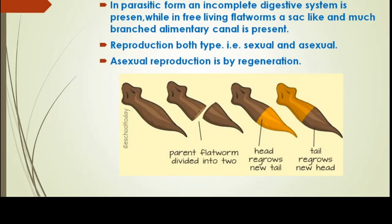In parasitic forms, the digestive system is incomplete or absent because they are attached to the host body and absorb prepared food directly, so they do not need a digestive system. In free-living forms like planaria, a specific digestive tract is present. The alimentary canal is branched with many branches throughout the body, and it is sac-like in structure.